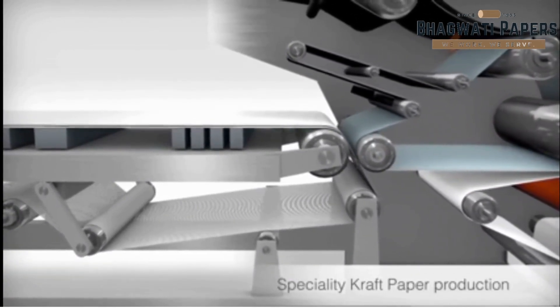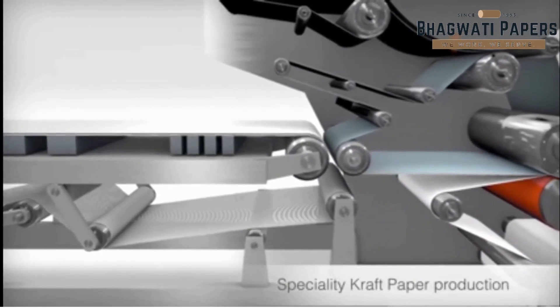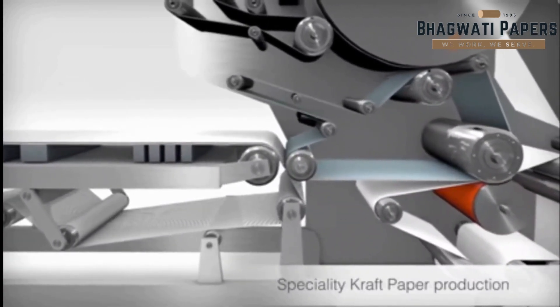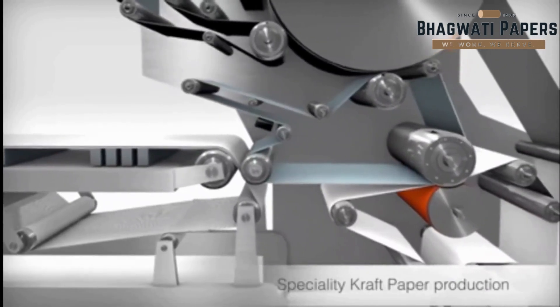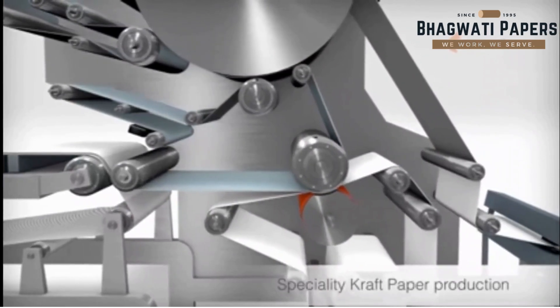At the end of the wire section, the wet paper web is transferred from the pickup roll via a felt to the press section. The paper web passes through the press section, where the dry content is increased by pressing the paper web between two rolls.